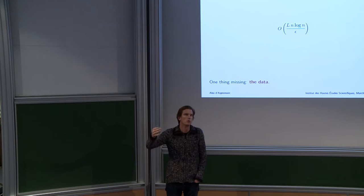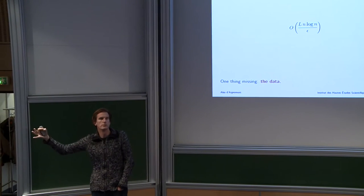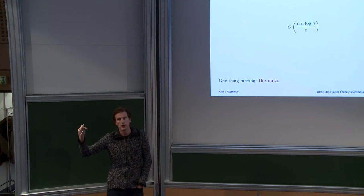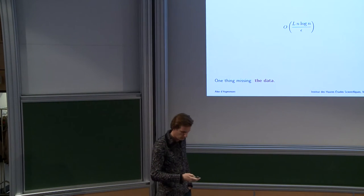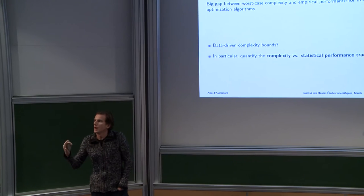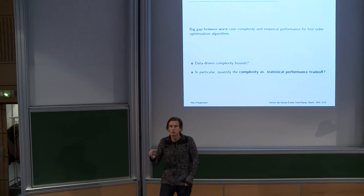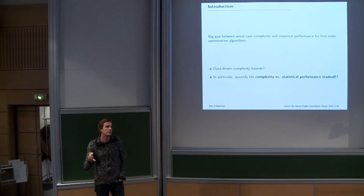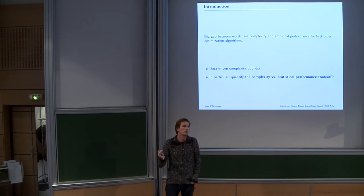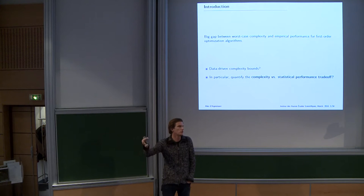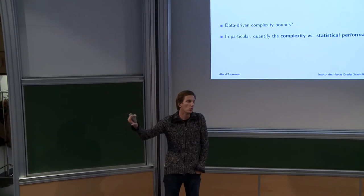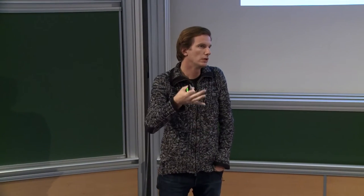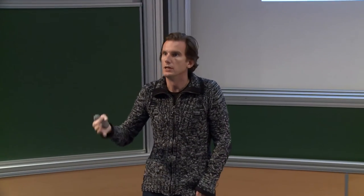And if you want to study computational trade-offs or computational complexity versus statistical performance trade-offs, the fact that your bound on the complexity is so coarse and so roughly dependent on the structure of your data is a big issue. This is an upper bound to begin with, so it's hard to make comparisons between the complexity of various optimization problems using only upper bounds, and this upper bound is very loose, especially since it only loosely depends on the problem data.